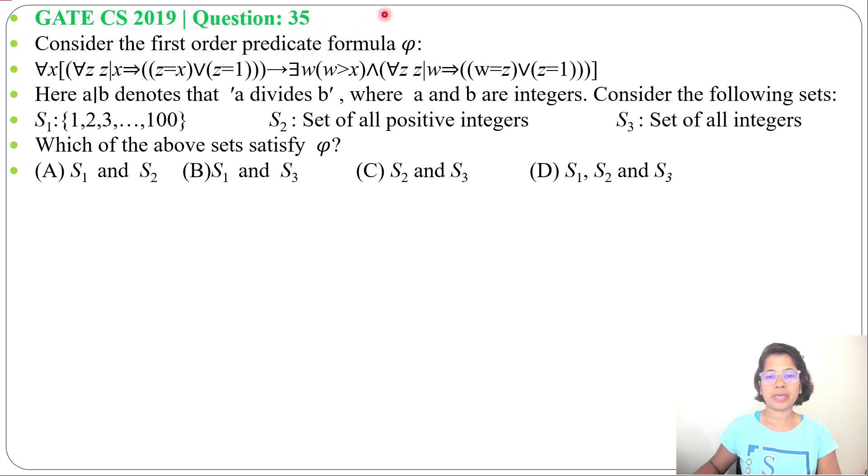Consider the first order predicate formula φ: For all x, for all z, z divides x implies z equals x or z equals 1, implies there exists a w, w greater than x and for all z, z divides w implies w equals z or z equals 1. Here a|b denotes that 'a divides b' where a and b are integers. Consider the following sets.